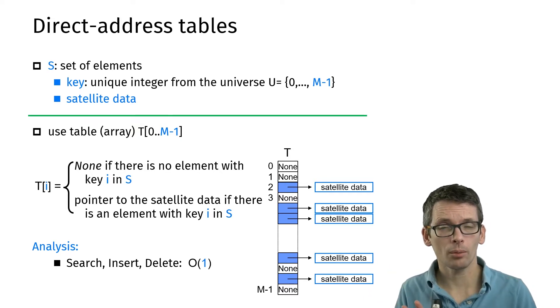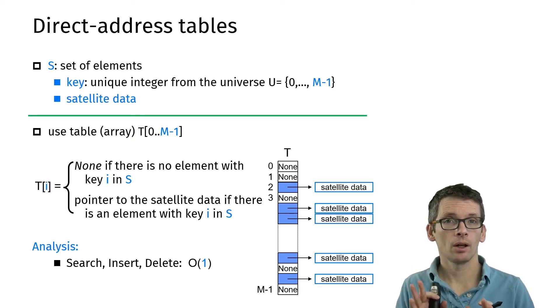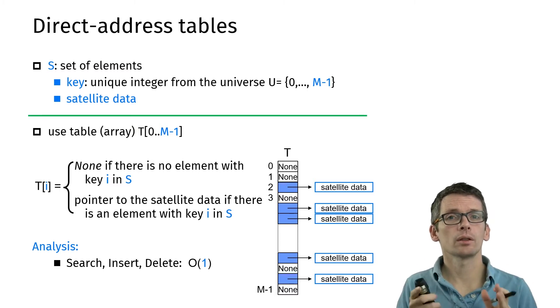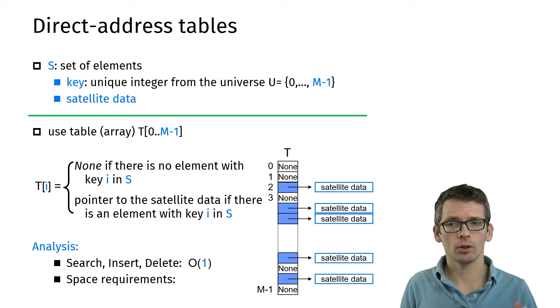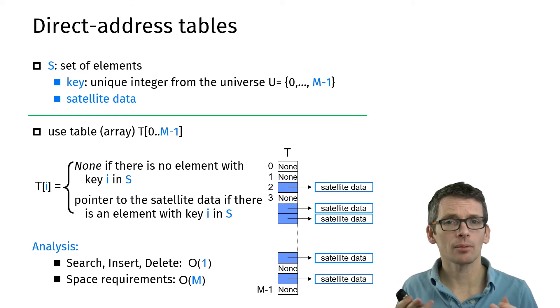What is the problem? The problem is the space requirement. No matter how many elements we have, we always use as space the size of the universe. So the space that I'm going to use is O(m).